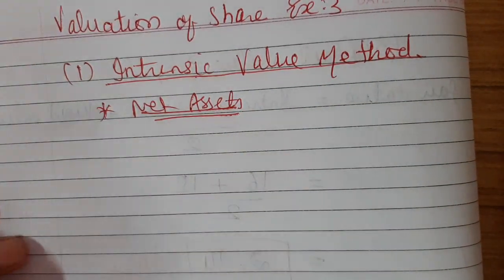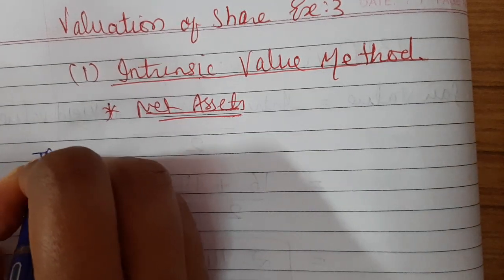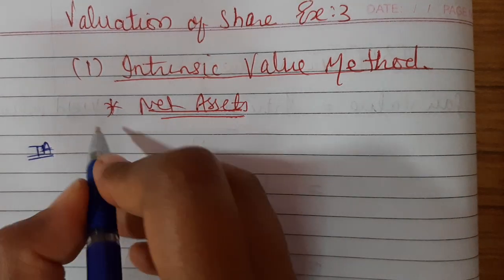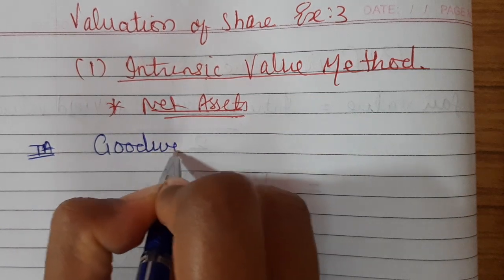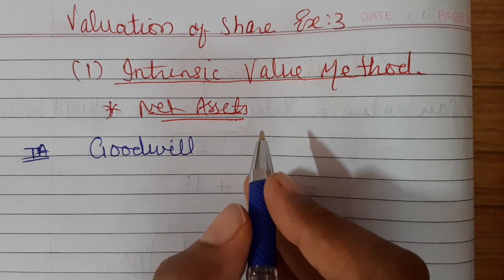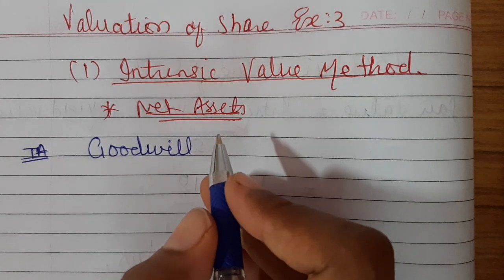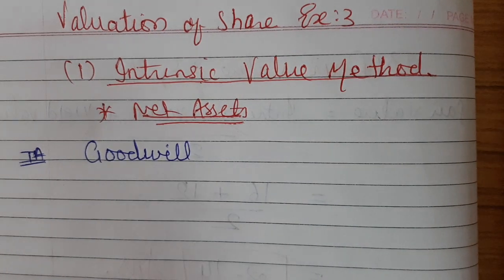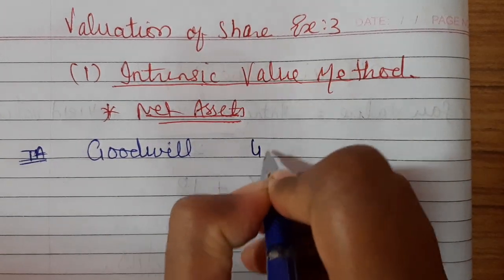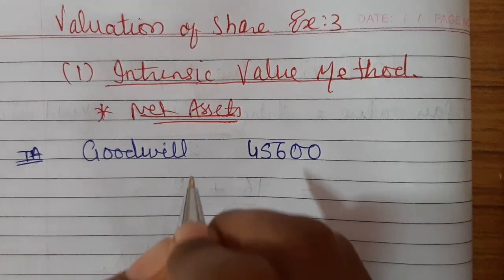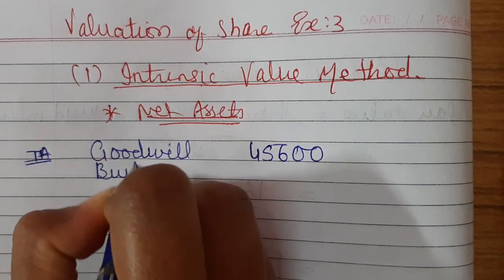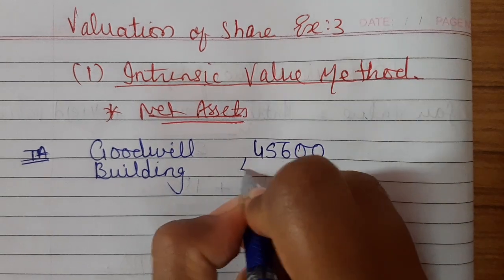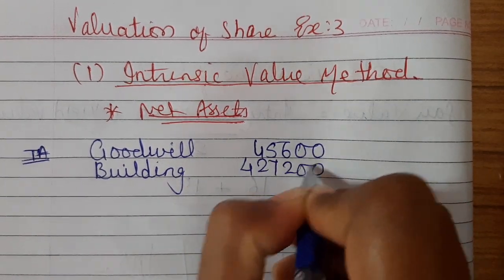For intrinsic value, firstly we need to calculate our net assets — total assets minus total liabilities. Let us have a look at our total assets first. Only the new value of building is given and the new value of goodwill is also given. Whenever the new value of goodwill is given in the adjustment, the balance sheet value of goodwill has no use at all, so directly I am writing the new value 45,600. Then new value of building is also given: 4,27,200.